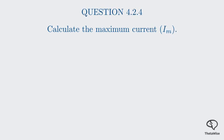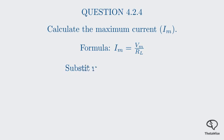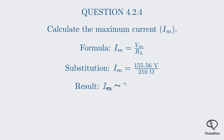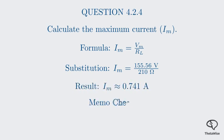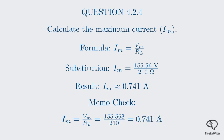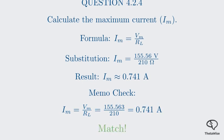Moving on to part 4.2.4, we're asked to find the maximum current, or peak current, I_M. Using Ohm's law with the peak voltage: I_M = V_M ÷ R_L = 155.56 volts ÷ 210 ohms, which gives us a maximum current of approximately 0.741 amps. So at its highest point, the current flowing through the load is 0.741 amps. The memo uses the same formula and calculates 155.5563 ÷ 210 = 0.741 amps. Our answers are identical.